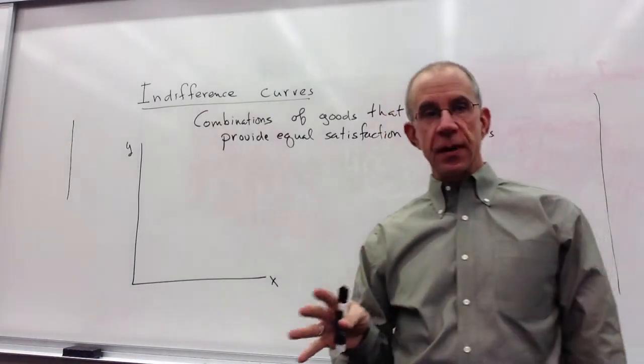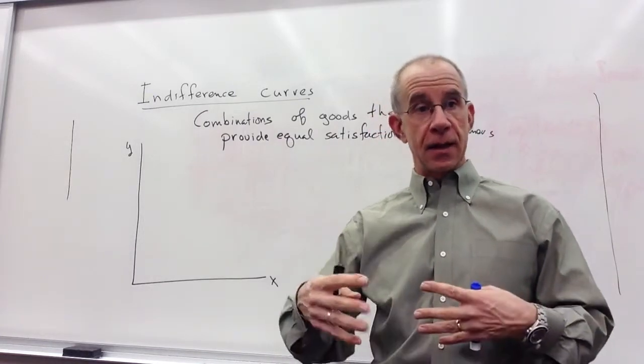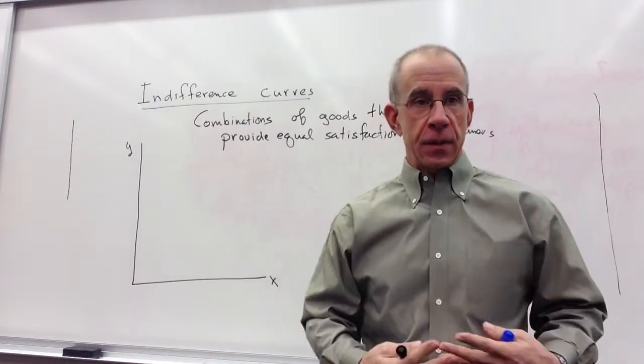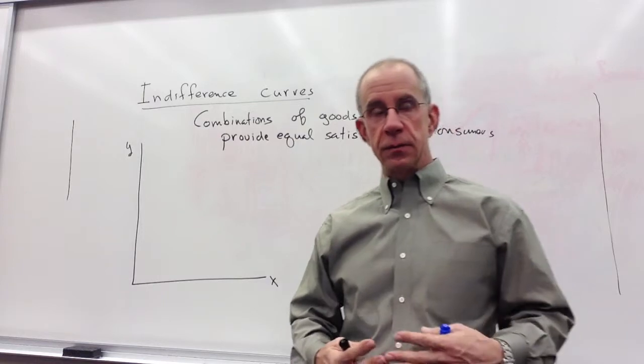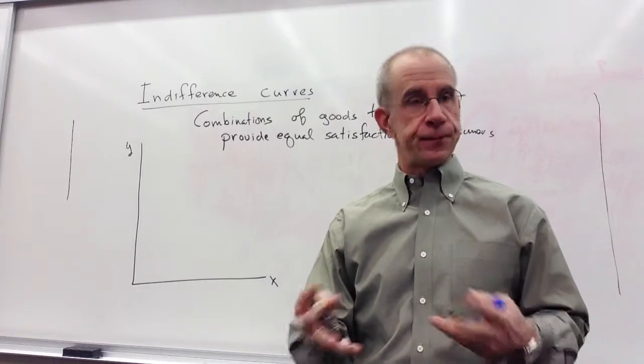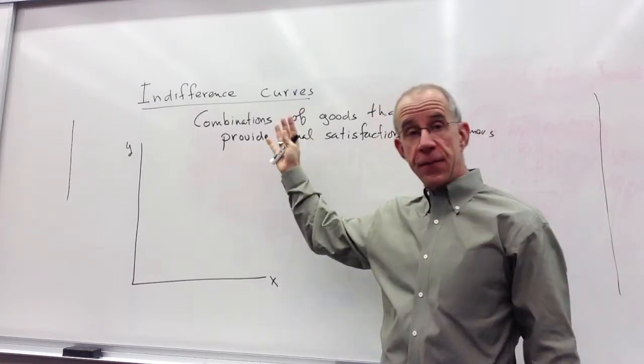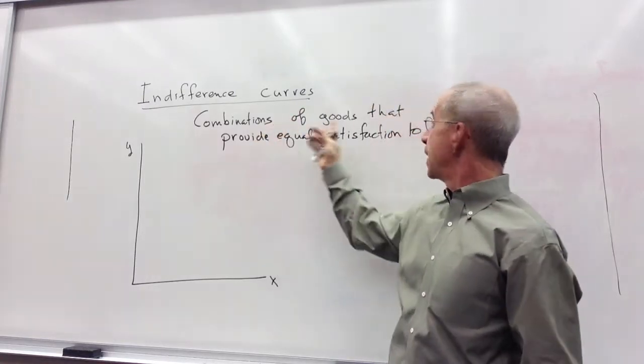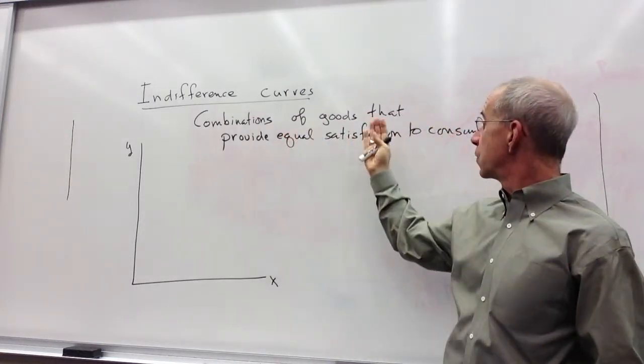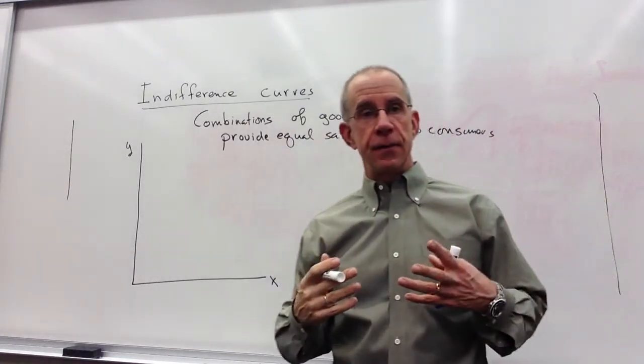An indifference curve is really the consumption side equivalent of an isoquant. It is a combination of things that give the same output or outcome. With an isoquant, that was combinations of inputs that gave the same level of output. With indifference curves, it is combinations of goods that provide equal satisfaction to the final consumer.